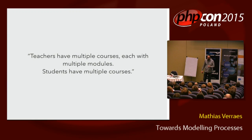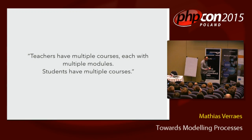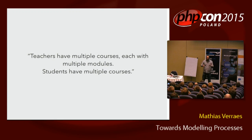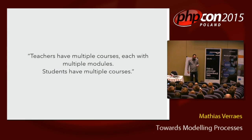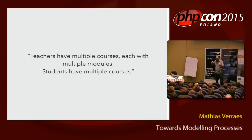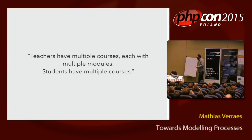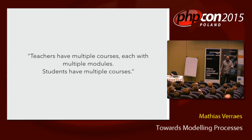I had a client with an online education system. One of the developers described the domain in very structural language: teachers have multiple courses, each with multiple modules, students have multiple things — blocks with relations between them, boxes and arrows, entities and entity relationships. Now, is this a useful model? It is to some degree. I can make some objects, some relations, some schemas with foreign keys. But it doesn't tell us how this system behaves. Because we're not really thinking about the behavior, we're missing important things — we don't even have the visual language to talk about them.